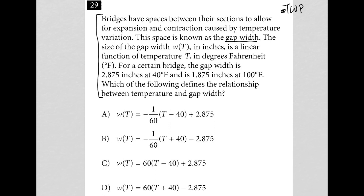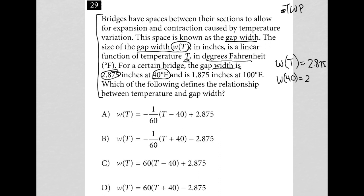For a certain bridge, the gap width is 2.875 inches at 40 degrees — so W(40) = 2.875. Then it says the gap width is 1.875 inches at 100 degrees Fahrenheit, meaning W(100) = 1.875.